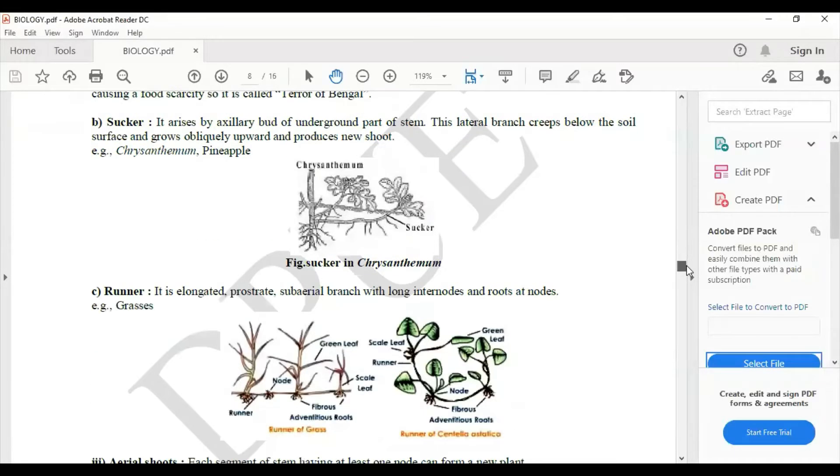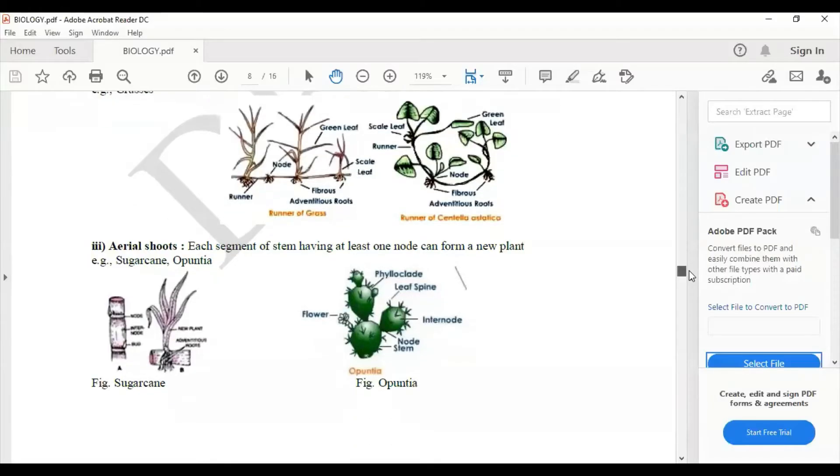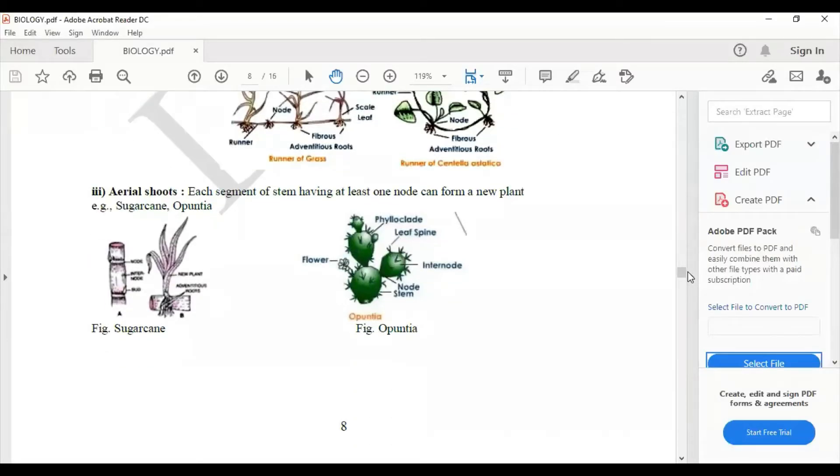Sucker, runner, and the next part is aerial shoots. That example would be sugarcane, opuntia.